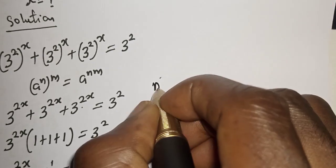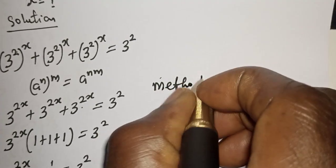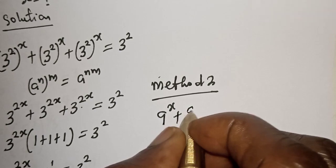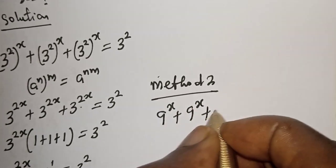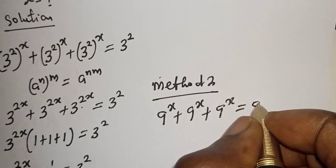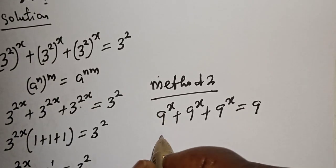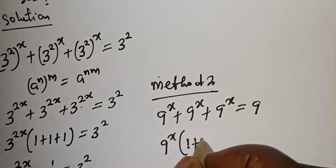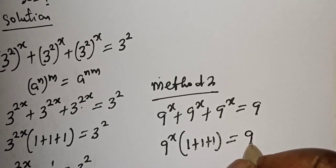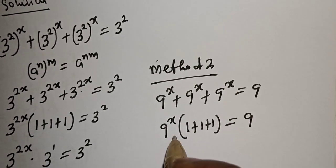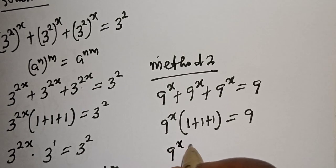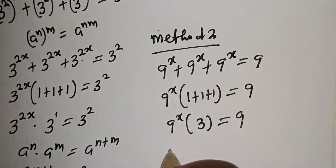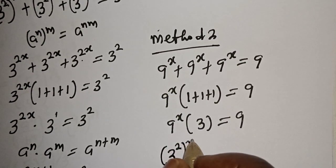Let's consider another method — Method 2. We have 9 raised to power s plus 9 raised to power s plus 9 raised to power s equals 9. Factor out 9 raised to power s: 9 raised to power s times bracket 1 plus 1 plus 1 equals 9. This gives 9 raised to power s times 3 equals 9. Now 9 raised to power s equals 3 squared raised to power s.